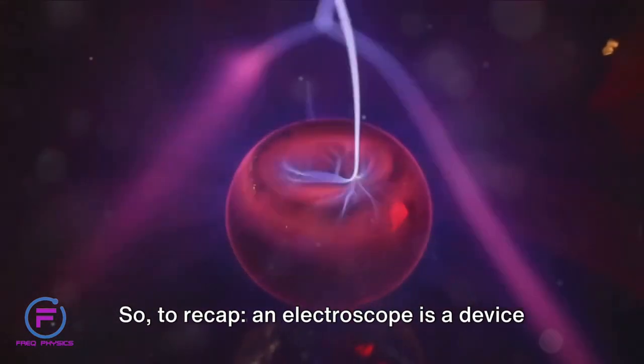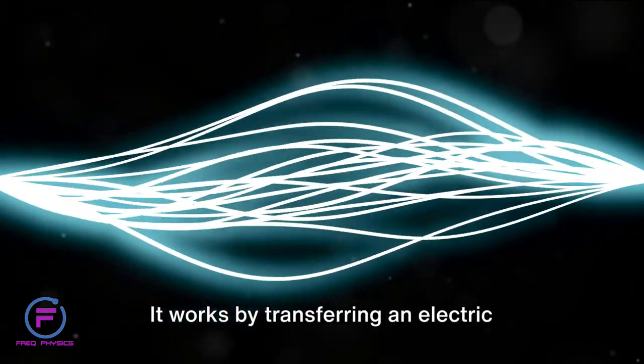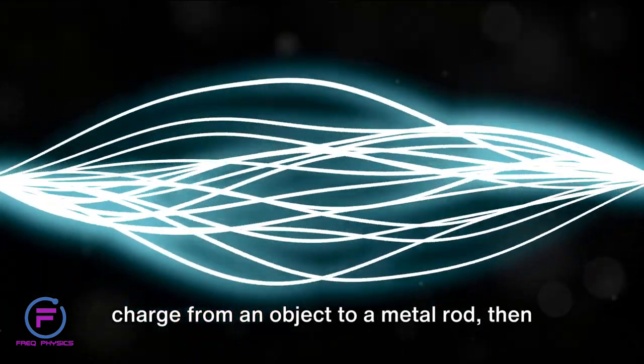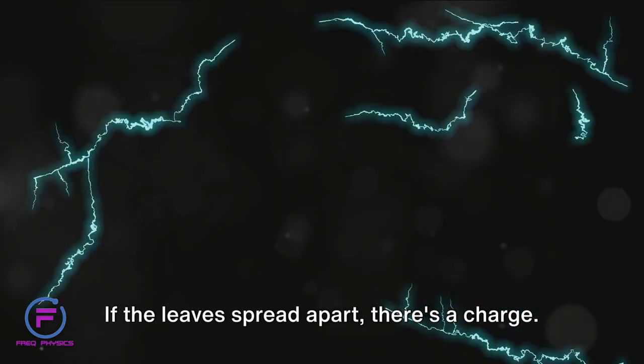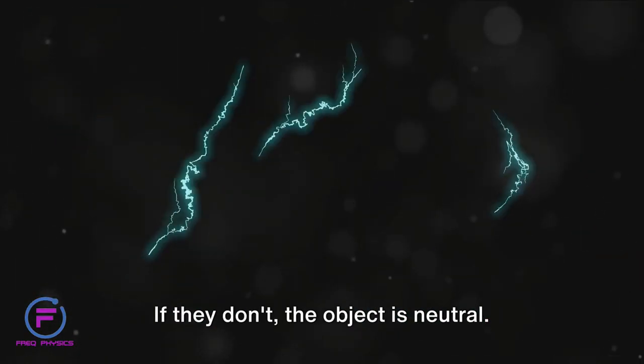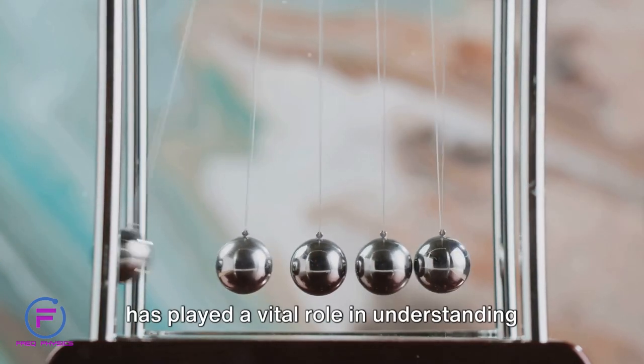So to recap, an electroscope is a device that detects electric charges. It works by transferring an electric charge from an object to a metal rod, then to two leaves of the same material. If the leaves spread apart, there's a charge. If they don't, the object is neutral. This straightforward yet effective tool has played a vital role in understanding the invisible world of electricity.